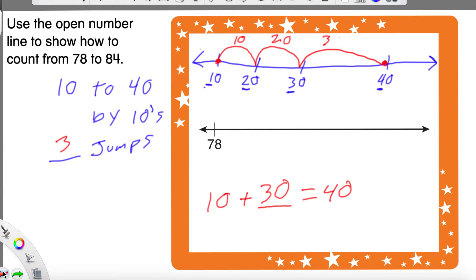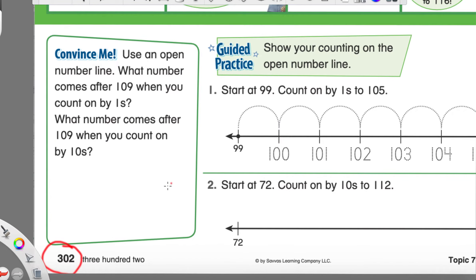So, now we're going to flip to the next page. And, I'm going to go ahead and get that set up on my computer as well. Let's see what they want us to do. It says, use an open number line. What number comes after 109 by ones?